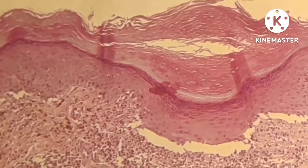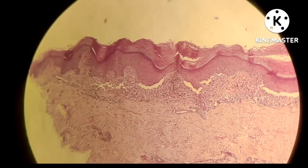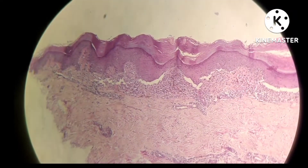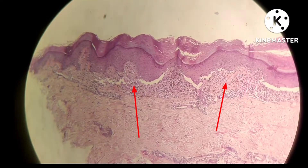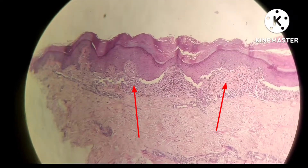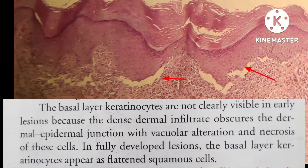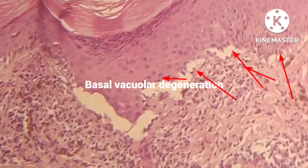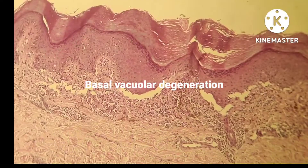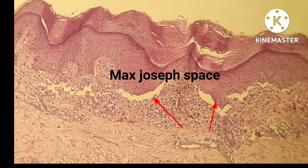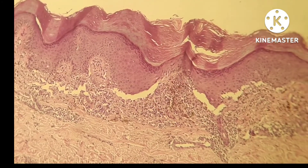There is a lichenoid infiltrate closely hugging the epidermis — a band of inflammatory infiltrate consisting of lymphocytes, macrophages and melanophages. It obscures the dermo-epidermal junction. The basal layer shows vacuolar alteration, vacuolar degeneration with presence of necrotic keratinocytes and apoptotic bodies, which are called civatte bodies.